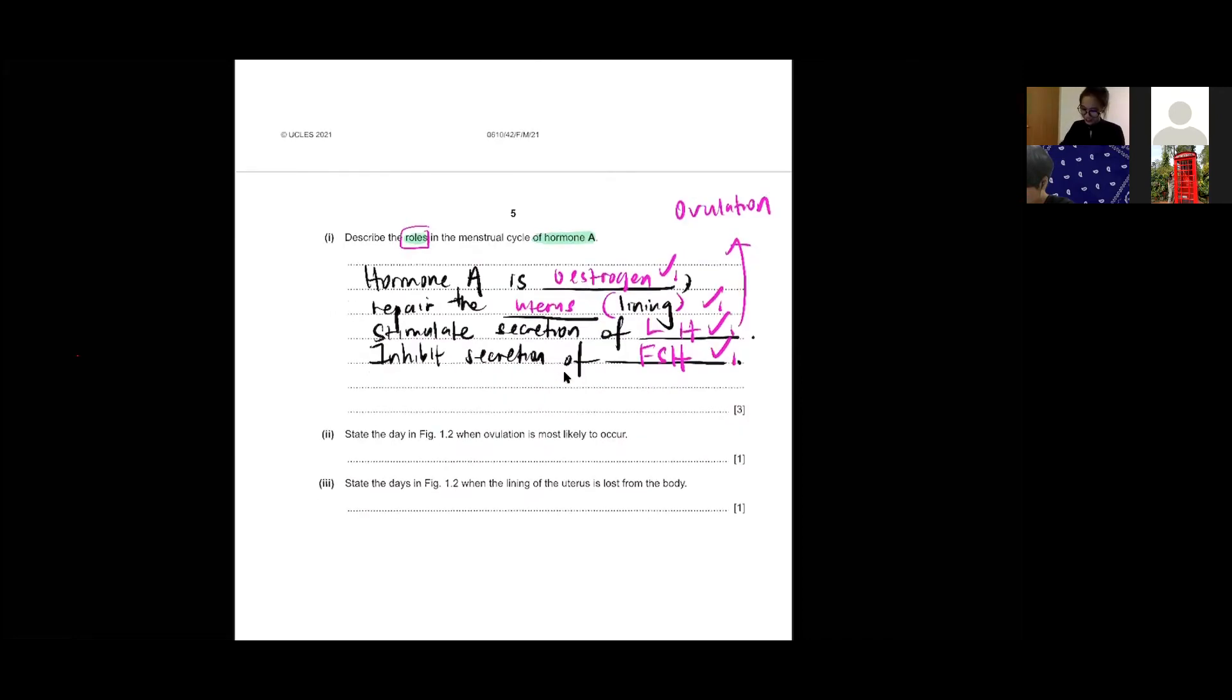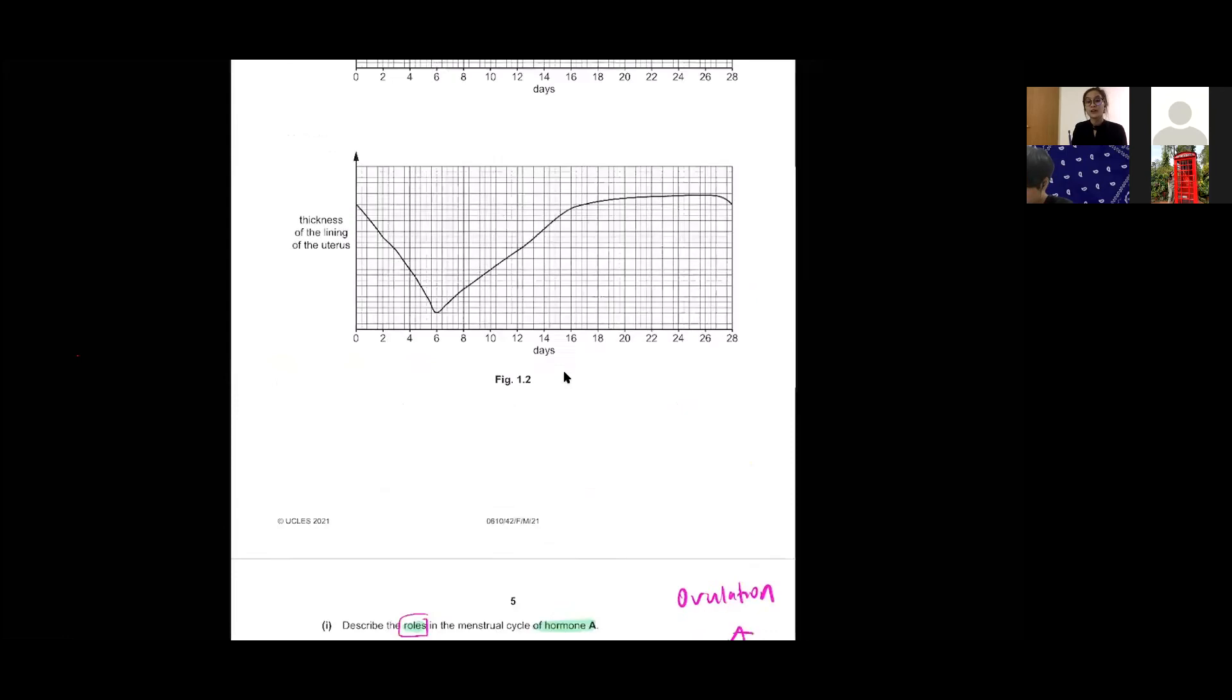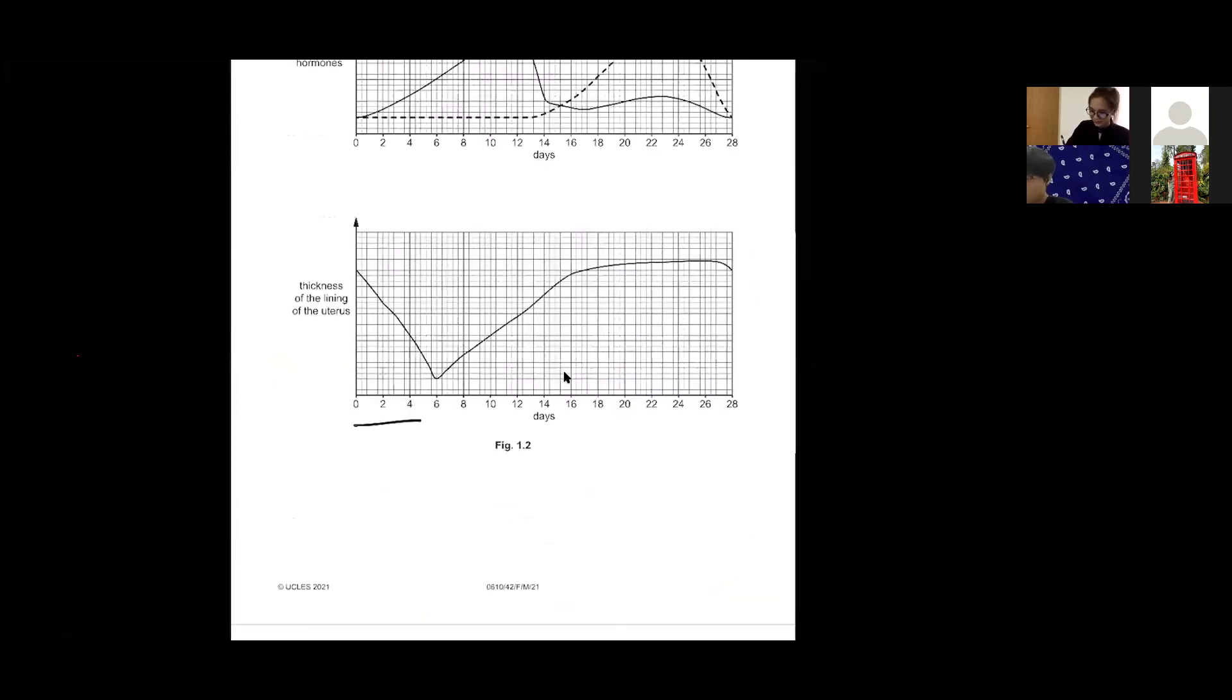Next one: state the days in Figure 1.2 when ovulation is most likely to occur. Usually is day 14, day 14 yeah. So you start from the period. Always remember period is day one. From this graph it is very easy to identify because this is already period.